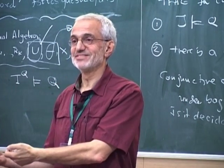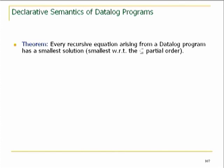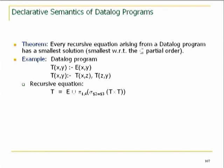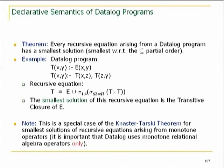People chose the least fixed point semantics. The theorem is that every recursive equation arising from a datalog program has a smallest solution with respect to the partial order. In the case of this datalog program, the smallest solution is exactly the transitive closure. It's the smallest solution to the recursive specification — a very special case of the Knaster-Tarski theorem. What was crucial is that all operators allowed in datalog programs are monotone: join, Cartesian product, projection, and selection involving equality.